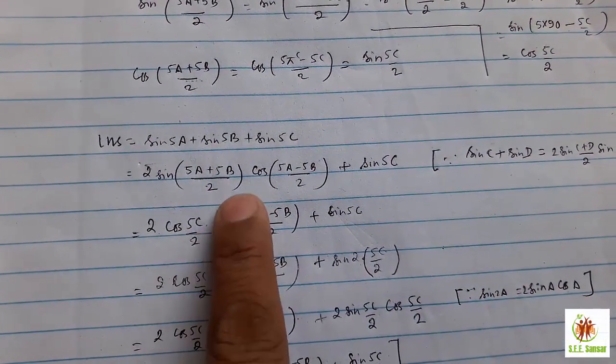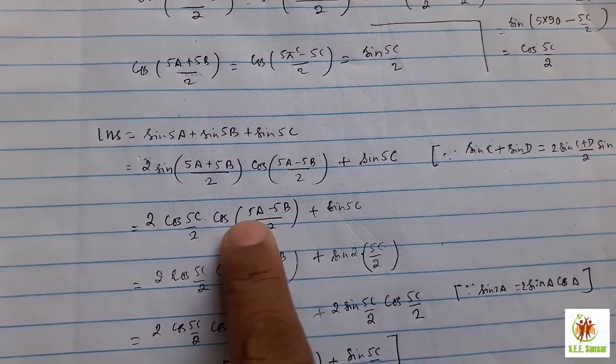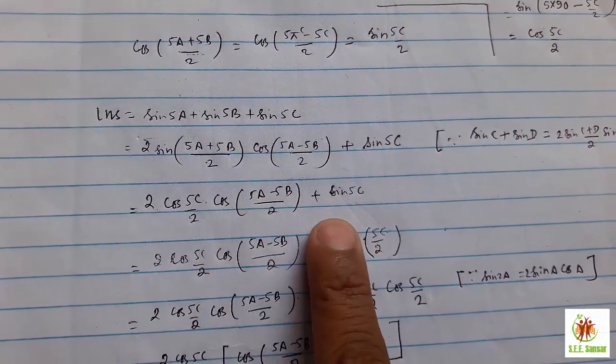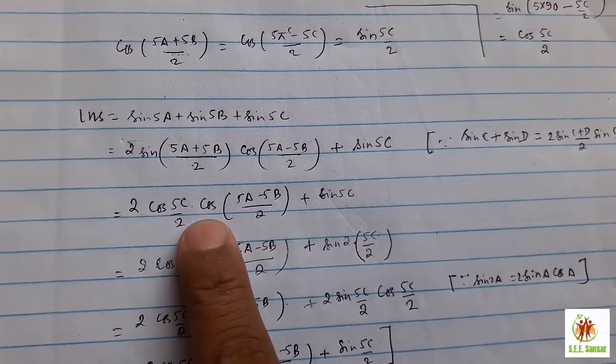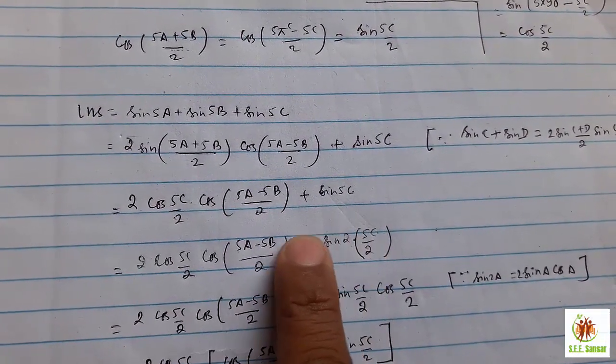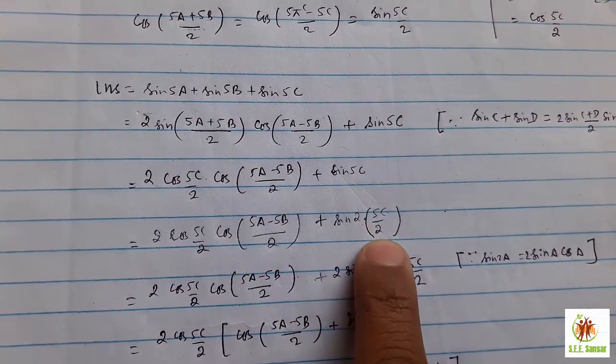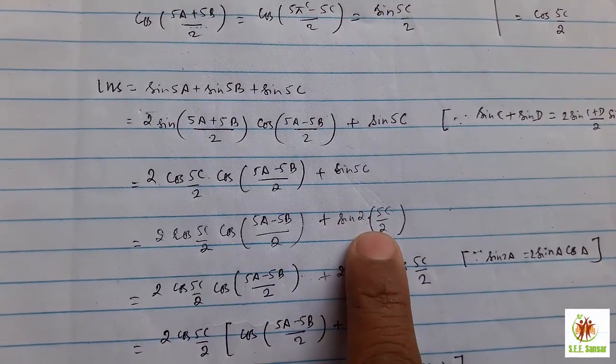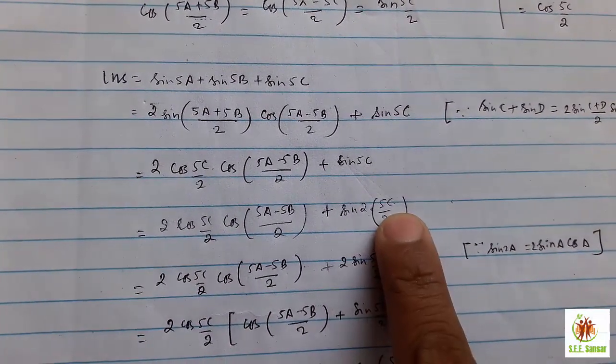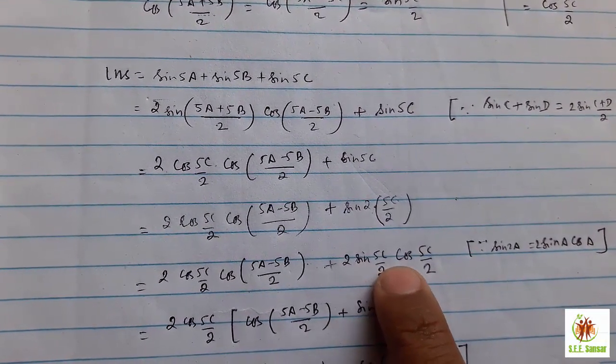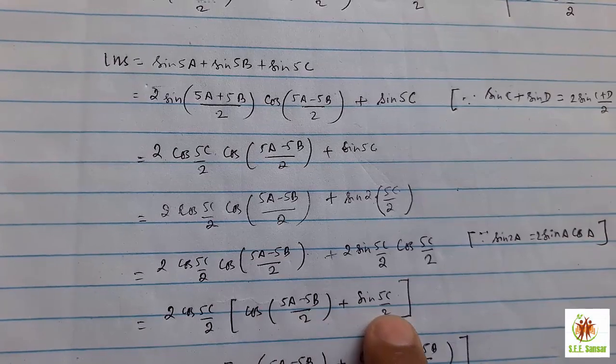Look at here. This sin 5a plus 5b by 2 is converted into cos 5c by 2 and remaining rest of the things are same. We need to know that from these two expressions, the expression before plus and after plus 5c, this should be common, but we can see there are 2 cos, but here is sin and there is nothing common. So convert this 5c into half angle, submultiple angle. You can write here 2. This 2 and 2 cancel each other. We can put this 2 in this manner. It will convert into the formula of sin 2a equal to 2 sin a cos a. Here a means 5c upon 2. Now 2 cos 5c upon 2 and 2 cos 5c upon 2, we can take common and rest of the things are same.